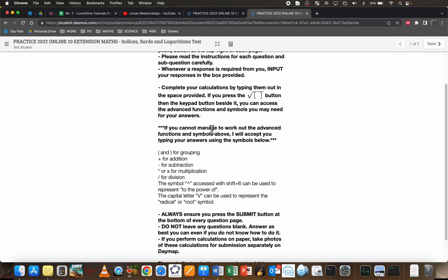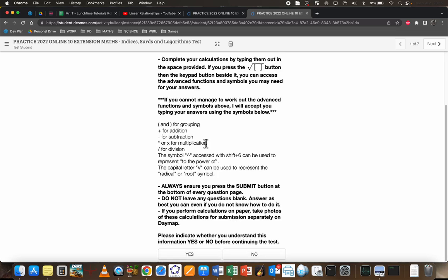If you really cannot work out how to use that button, then I'll accept these symbols that you can type out. I'd accept a capital V for square root or the radical symbol if you really couldn't work this out. Also, that hat symbol which is shift-6 if you wanted to do to-the-power-of. But I'm warning you, if you have to do it this way, your working is going to look very confusing - for yourself, not for me, I'll be able to work it out.